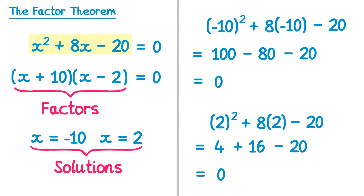So the reason they're solutions is because if you substitute them in they give you zero. The factor theorem is concerned with the link between the solutions and the factors. The solution x equals negative 10 corresponds to a factor of x plus 10, and the solution x equals 2 corresponds to a factor of x minus 2. So if you know the solutions you can find the factors by doing x and then using the opposite sign — positive becomes negative, negative becomes positive.